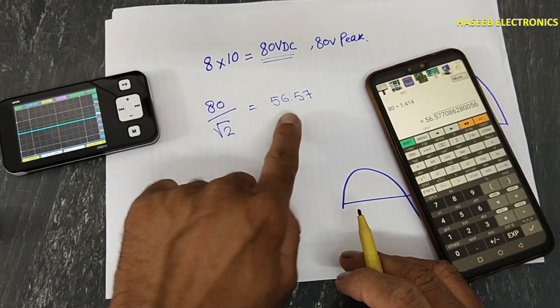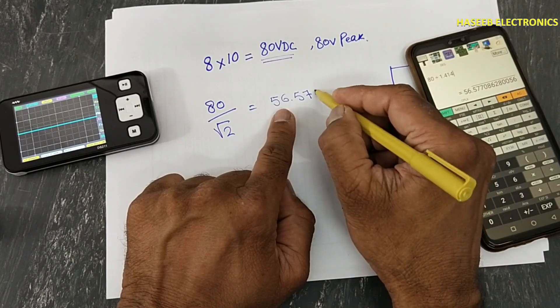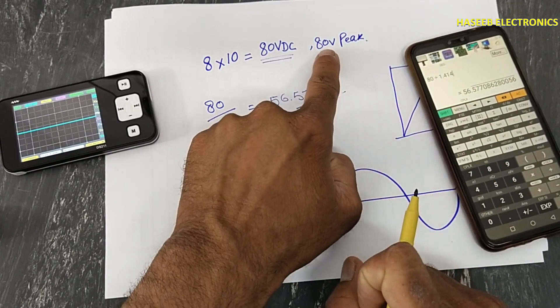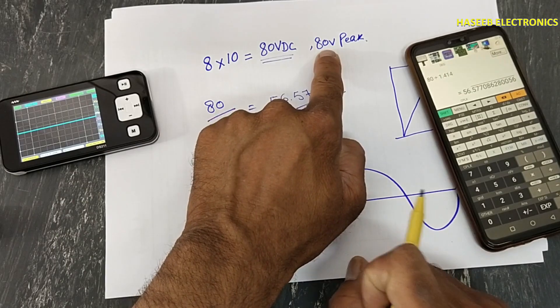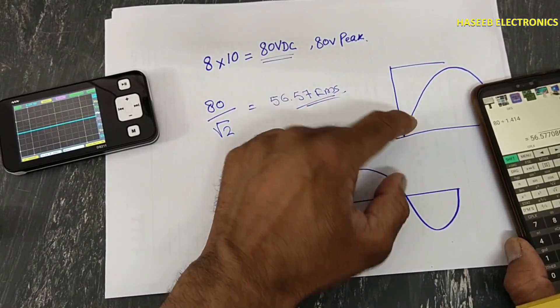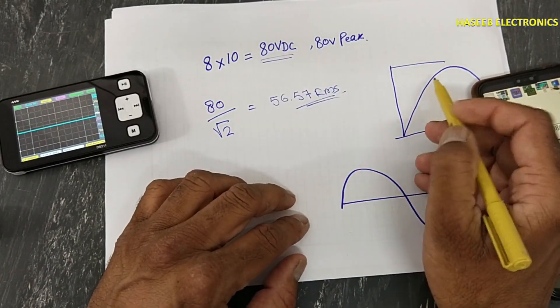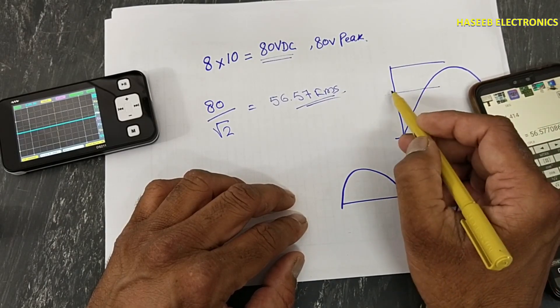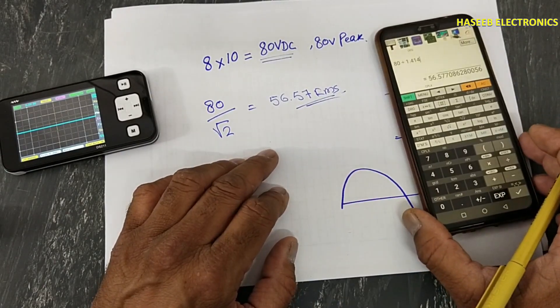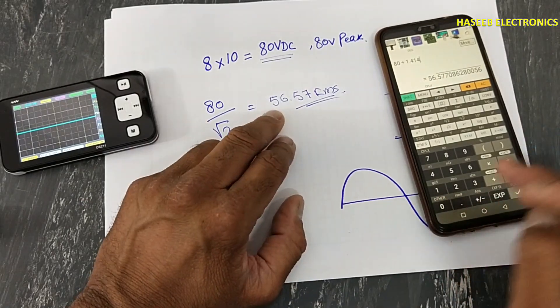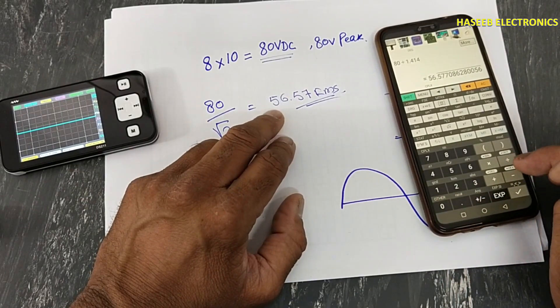Now this is RMS voltage. If we test this signal on oscilloscope, it will show this peak. And if we measure this signal with multimeter, it will give 56 volts.